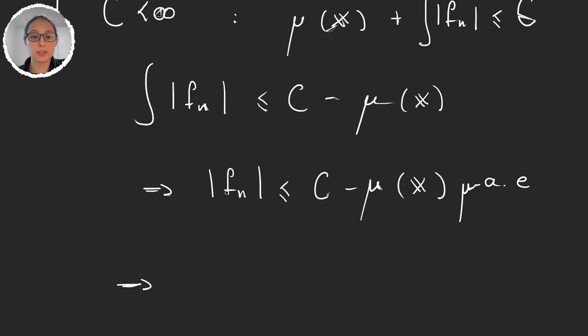And now from this, immediately because we have the pointwise convergence of f_n to f and the upper bound for the sequence, then applying just the dominated convergence theorem, we have that the integral of f is the limit of the integrals of f_n. And this is exactly what we wanted to prove here.